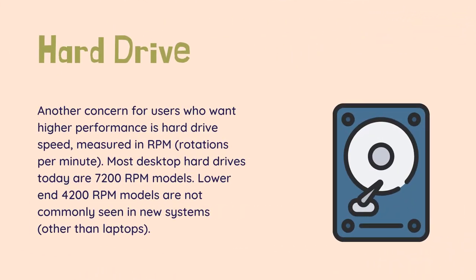Another concern for users who want higher performance is hard drive speed, measured in RPM — rotations per minute. Most desktop hard drives today are 7200 RPM models. Lower-end 4200 RPM models are not commonly seen in new systems other than laptops. Higher-end 10,000 RPM hard drives are generally seen only in gaming and other extremely high-performance computers due to their cost. For example, a 1TB 7200 RPM drive costs around $50 (as of January 2017), while a 1TB 10,000 RPM drive costs $120 or more. A 1TB SSD starts at about $250.